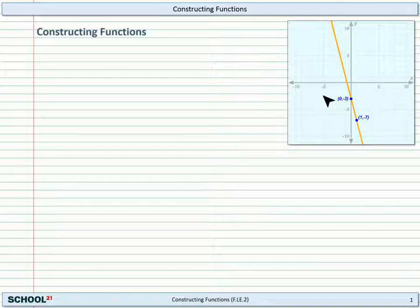So first let's look at the information that we're given on the graph. Really the most important things and the things that we can really be certain about are the two points, 0, negative 3 and 1, negative 7.